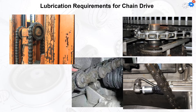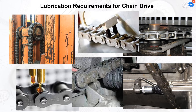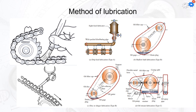Lubrication is essential because of the moving parts. Usually, a petroleum-based lubricating oil similar to engine oil is recommended. The three main methods of lubrication for chain drives are: Type A, which is manual or drip lubrication; Type B, which is bath or disc lubrication; and Type C, which is oil stream lubrication.